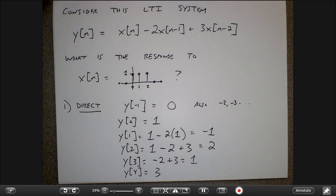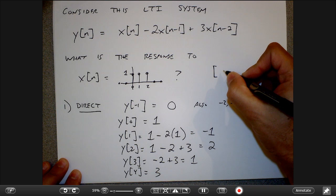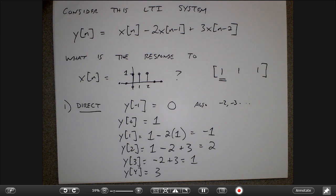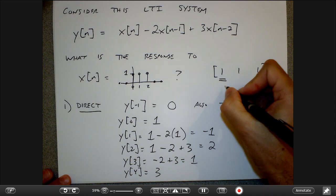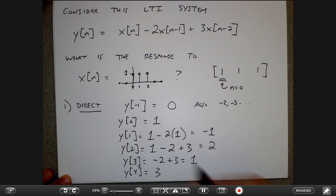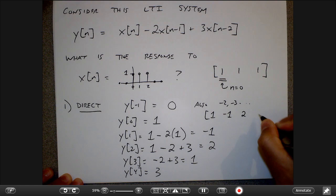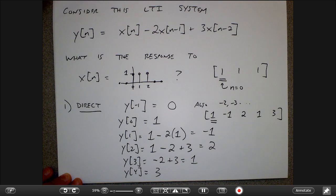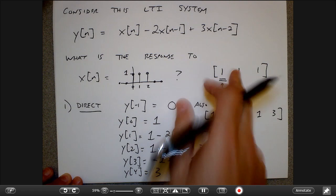One thing that makes life easier is to represent this more compactly. I could represent the input signal as: 1, 1, 1, using a double underline to remind myself where X of zero is — the double underline means N equals zero. My shorthand output for Y would then be: 1, −1, 2, 1, 3, starting at N equals zero. The impulse response of the system can be written in a similar way, but we don't know what the impulse response is yet.